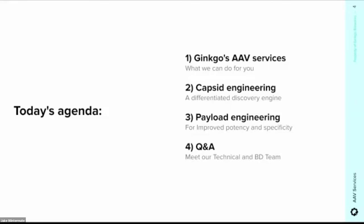Then we're talking payload engineering. The typical wish list for a gene therapy payload: you want robust expression of your construct, cell type specific expression, minimized off-target effects, and improved safety profile. You might also want the expression to respond to an extracellular or intracellular signal if that's part of your therapeutic mechanism. This is fundamentally a DNA programming problem — something that we're good at at Ginkgo.